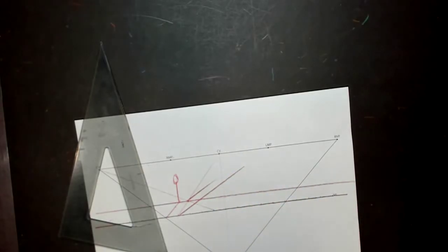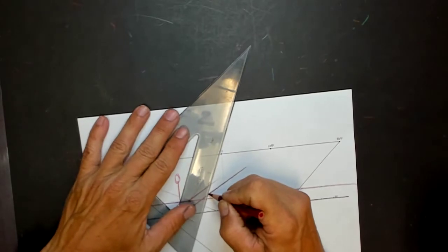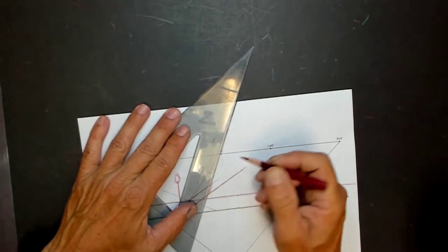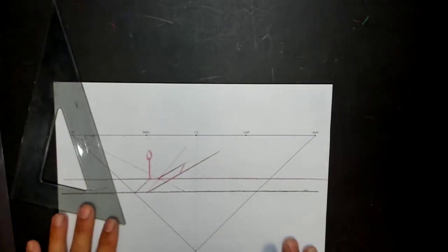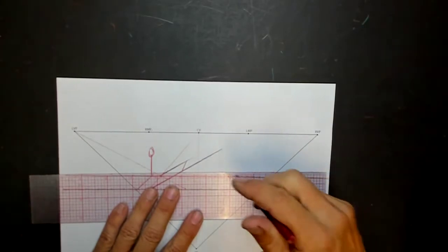But lines that are parallel to the picture plane never have vanishing points. The lines have to be at an angle to the picture plane to have a vanishing point. So we go along here - here's our road.